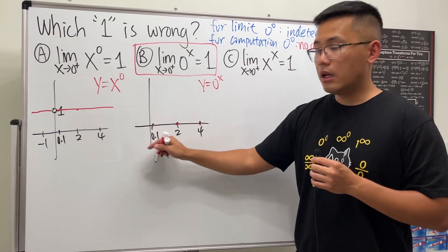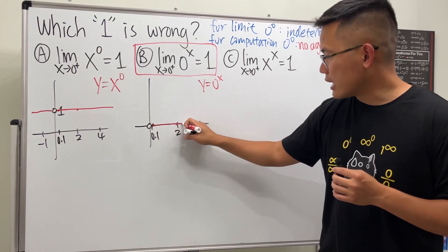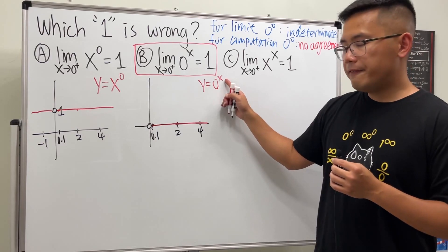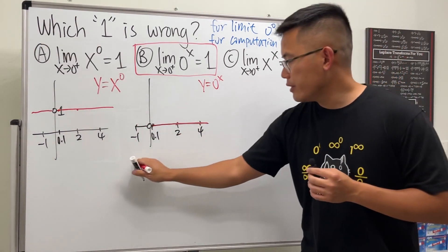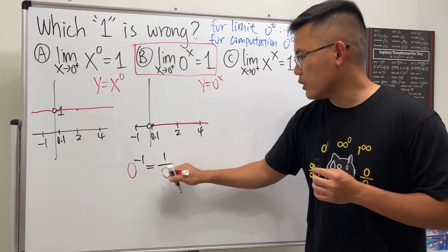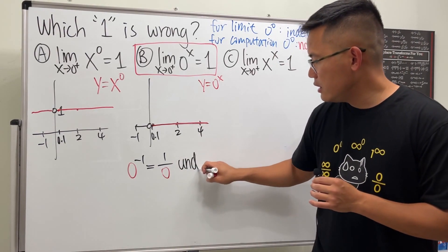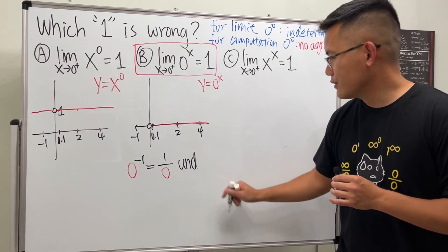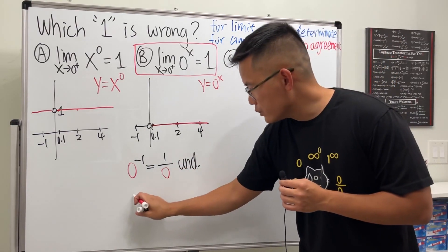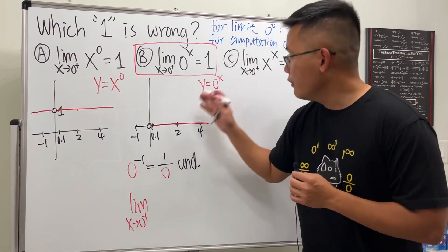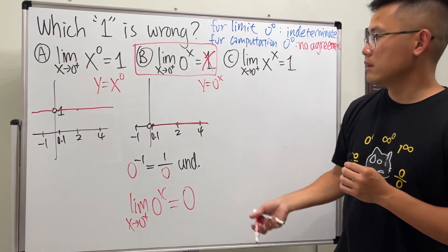At x = 0 I'll put an open circle. Connecting the dots we get a line hugging zero. We cannot have negative numbers here — for example, if x = -1, we get 0^(-1) = 1/0, which is undefined. So there's no left-hand side. Based on this graph, the limit as x approaches zero plus of 0^x equals zero — not one. Done.